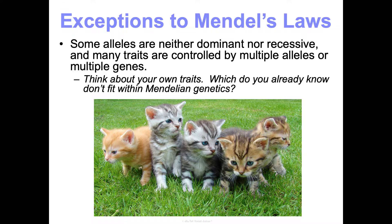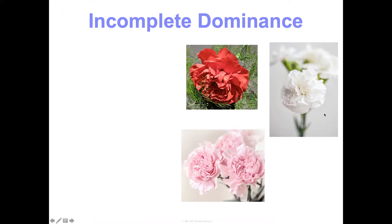Think about yourself — what do you already know about you that doesn't fit with Mendelian genetics? For example, personality involves so much genetically and environmentally; it's not just two options. Even something less complex like hair color has many variations — you can be bald, have early balding, thin or thick hair. There's so much that goes into it. We're going to talk through examples of these exceptions today.